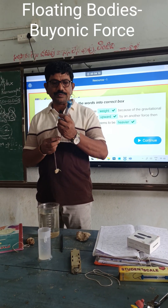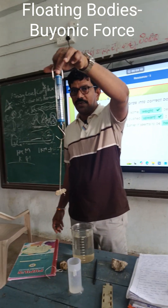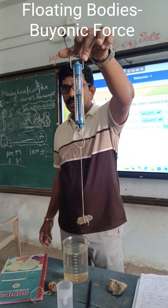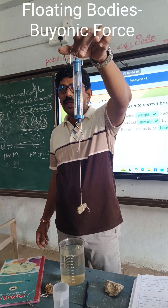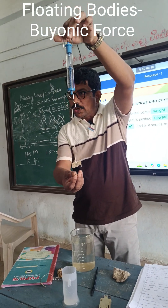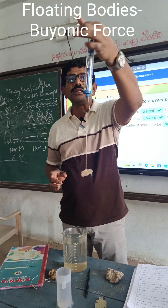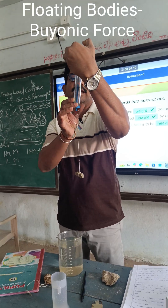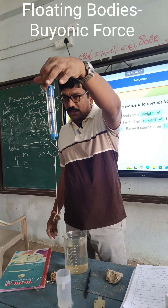Now see this one. What is the weight of the stone when I measured with the spring balance? 25 grams. It means that earth is attracting the stone towards its center with a force of 0.25 newtons.